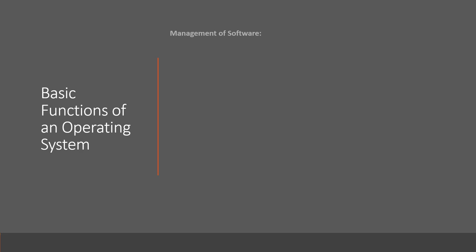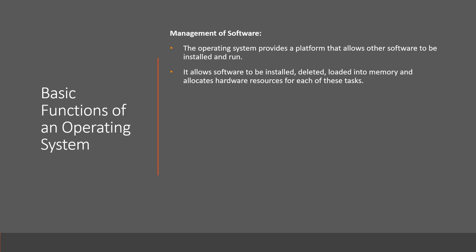Finally, let's examine the basic functions of an operating system. The first is the management of software. The operating system provides a platform that allows other software to be installed and run. Software can be installed and deleted, and it can be loaded into memory. The operating system also allocates all the hardware resources required to run this software.